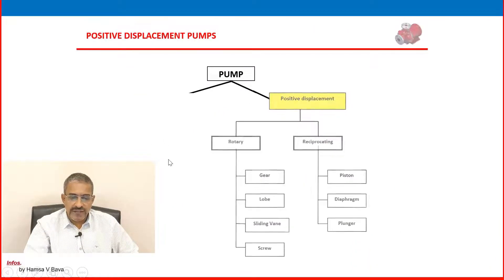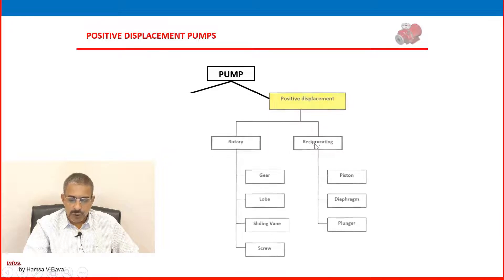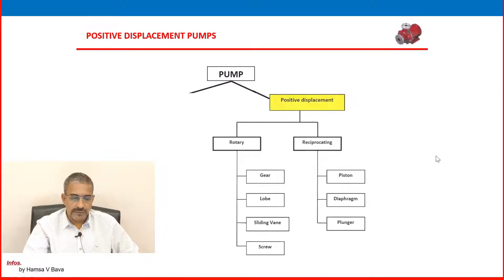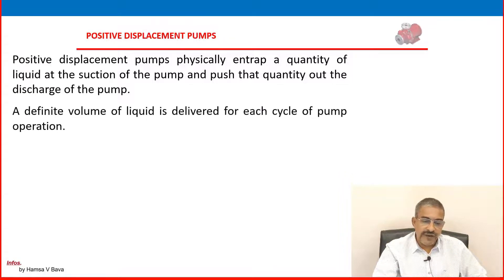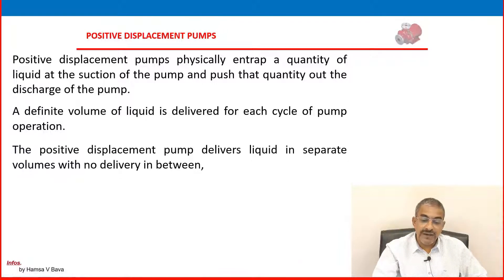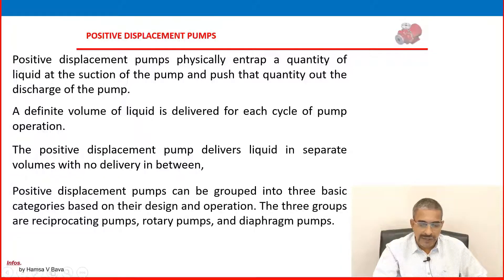In the positive displacement pump, there are two main classes: rotary and reciprocating. In this class, we are taking reciprocating pump — piston, diaphragm, and plunger. We will discuss rotary later. Positive displacement pumps physically entrap a quantity of liquid at the suction and push that quantity out at the discharge. A definitive volume of liquid is delivered for each cycle of pump operation. Positive displacement pumps can be grouped into three basic categories: reciprocating pump, rotary pump, and diaphragm pump.